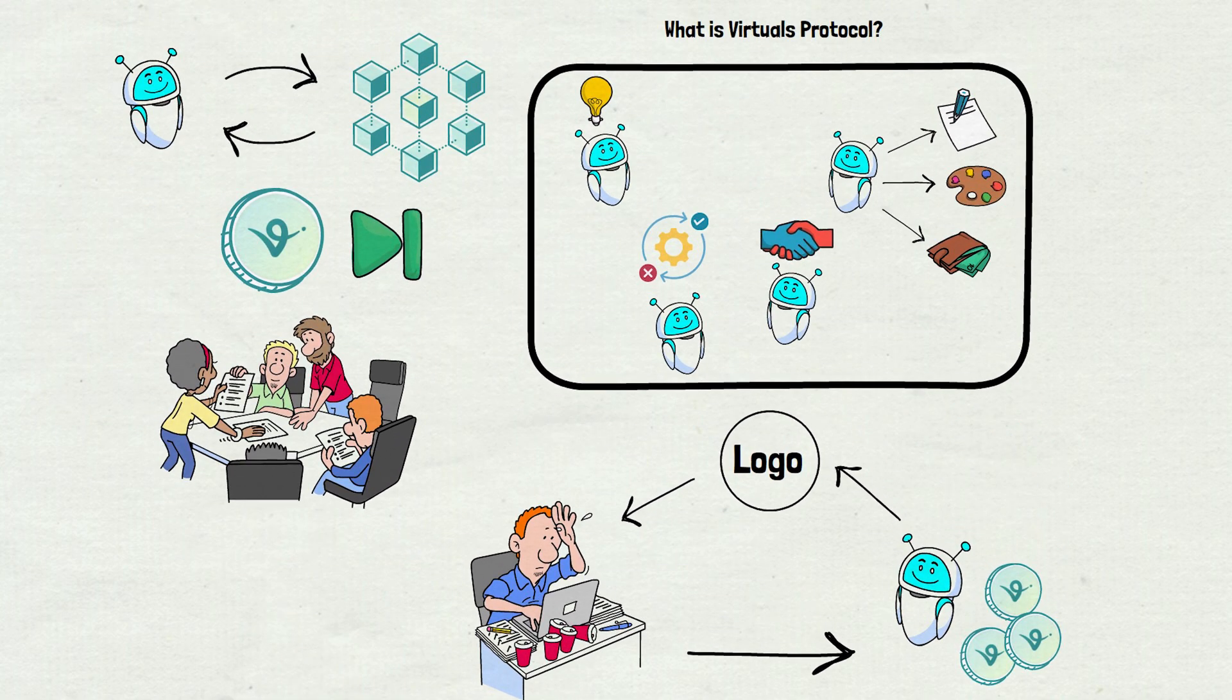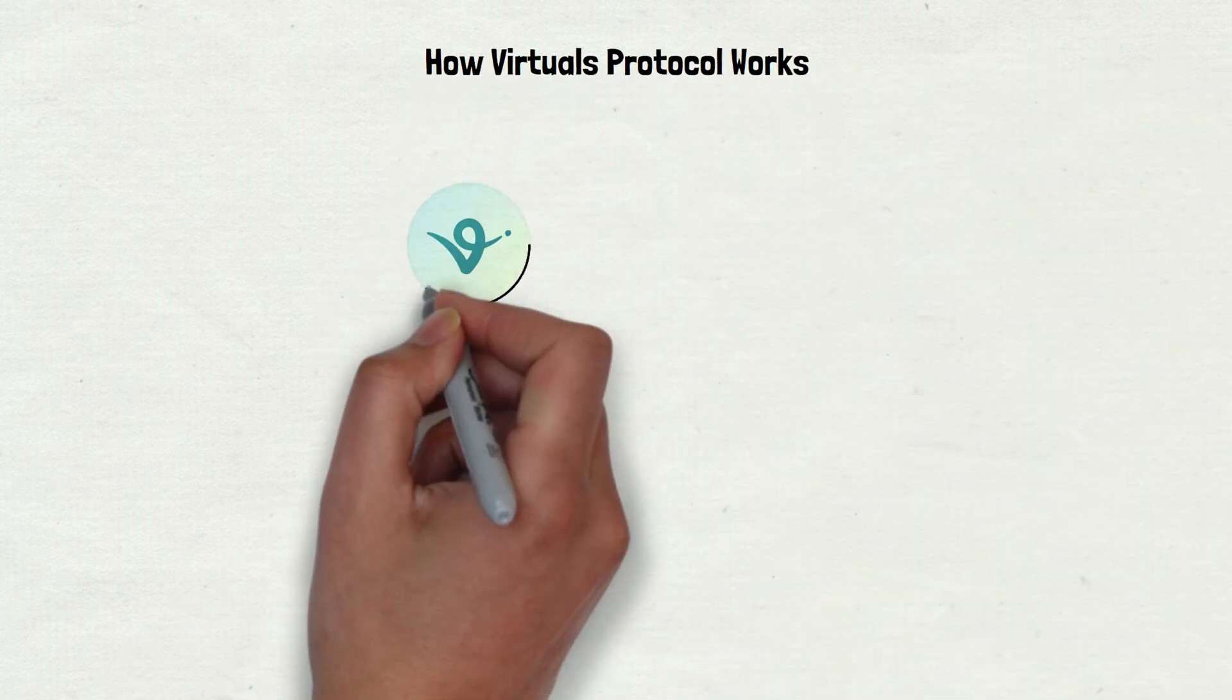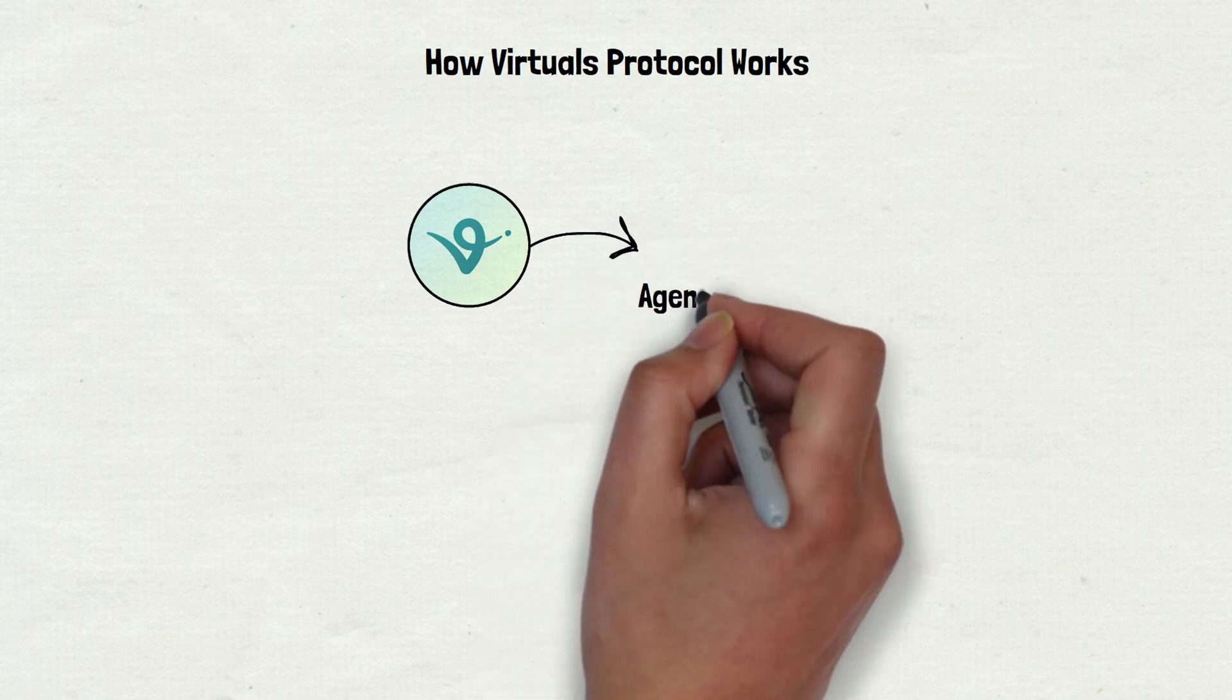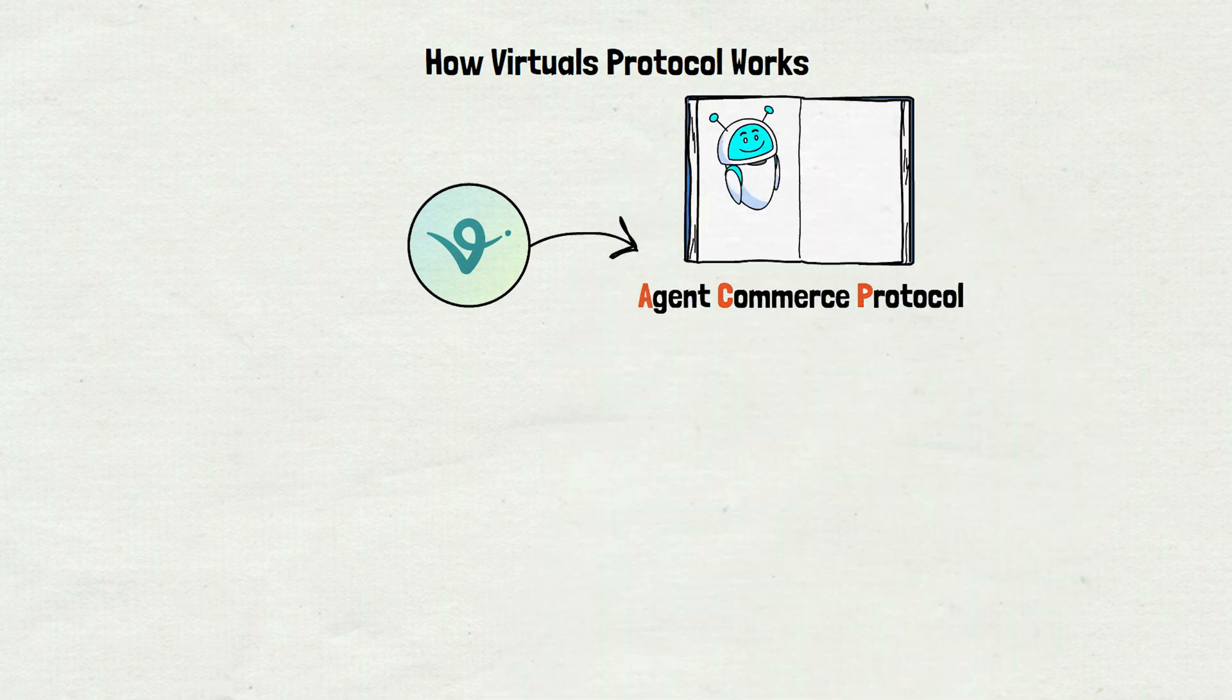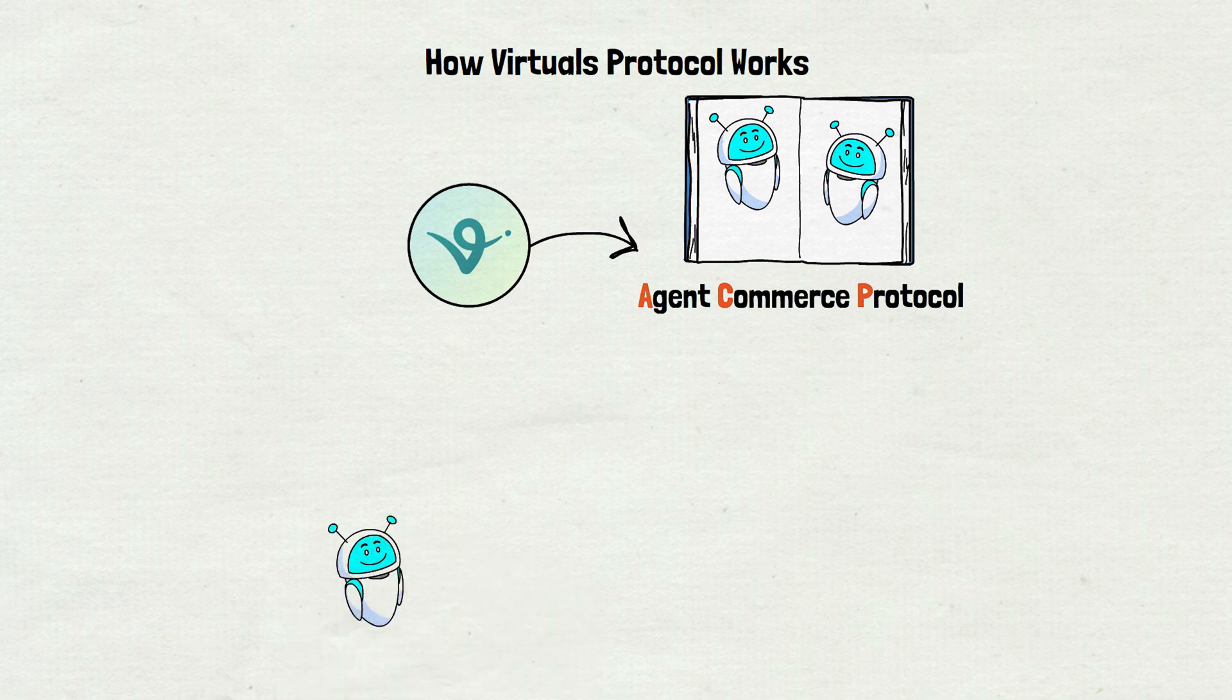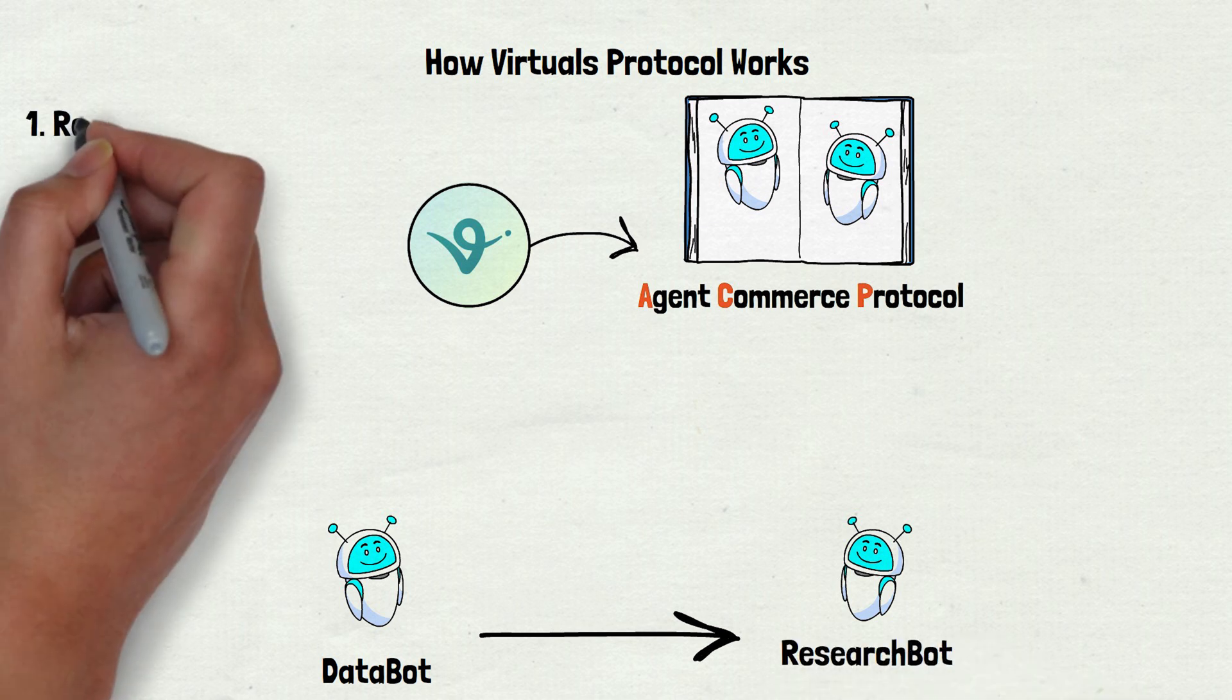But how does VIRTUALS PROTOCOL work exactly? Here's where things get interesting. At its heart is something called the Agent Commerce Protocol, or ACP for short. This is the rulebook that lets AI agents talk and trade with each other. Say one AI agent, let's call it Data Bot, needs a report on crypto trends. It can't write it alone, so it sends a request to another agent, Research Bot, that's good at research. This is the request phase.